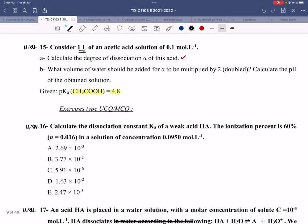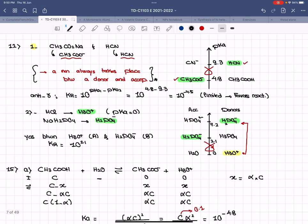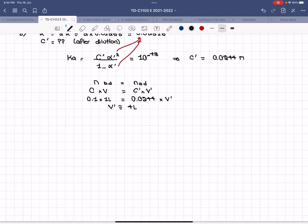In the question, he said calculate the volume of water that should be added. The volume of water that should be added is not the volume after dilution. The volume after dilution, the total volume after dilution, went from 1 to 4. It means the volume that you added from 1 to 4 is actually 3 liters.